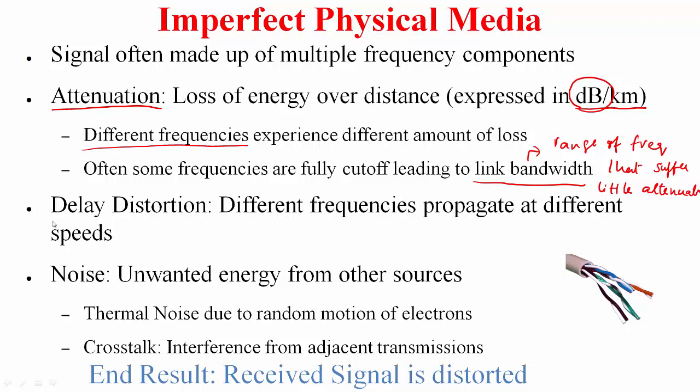Another thing the signals can experience is what is called delay distortion. This happens because the different frequencies propagate at different speeds. What this basically means is they do not arrive at the receiver at the same time.